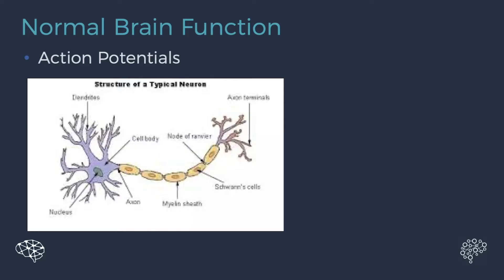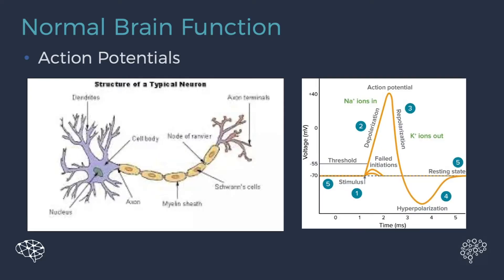Now to understand why this happens, we have to take a look first at normal brain function. So here is our neuron, and it sends signals through this process called action potentials. So action potentials, you can see here, this is the voltage, and this is in millivolts. The resting membrane potential of a neuron is minus 70 millivolts.